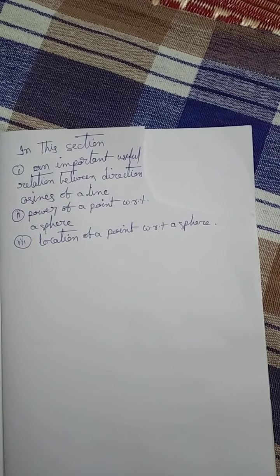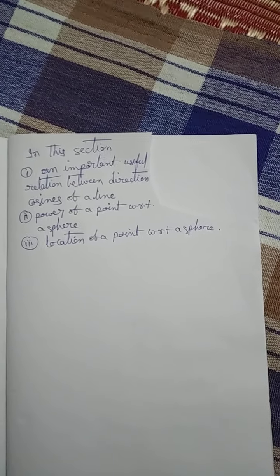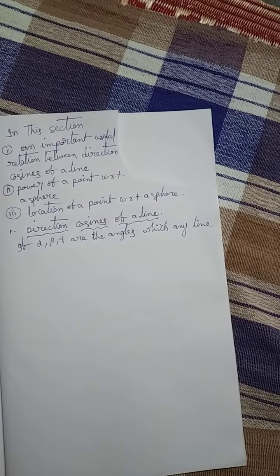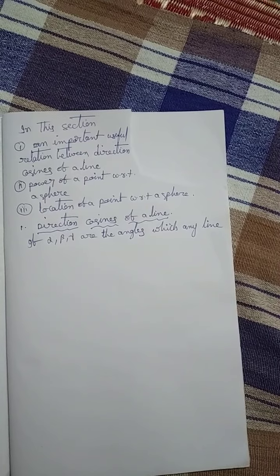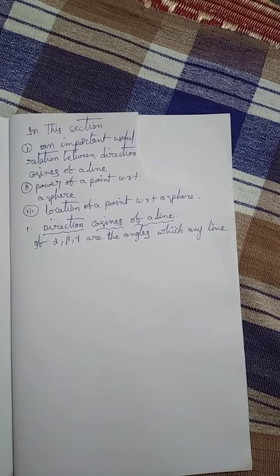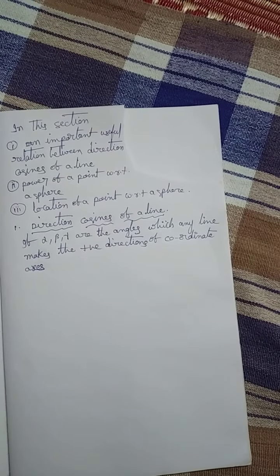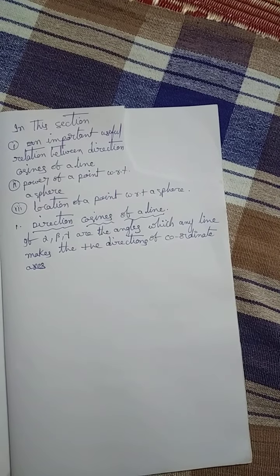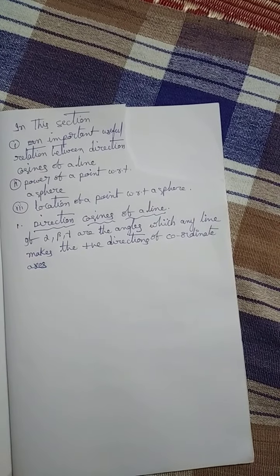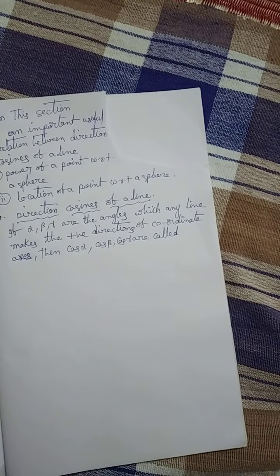We will briefly explain the first point: an important useful relation between direction cosines of a line. If alpha, beta, gamma are the angles which any line makes with the positive directions of the coordinate axes x, y, z, then cos alpha, cos beta, cos gamma are called direction cosines of the given line. It is generally denoted by L, M, N respectively. That means L equals cos alpha, M equals cos beta, N equals cos gamma.